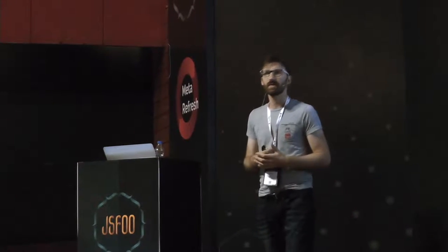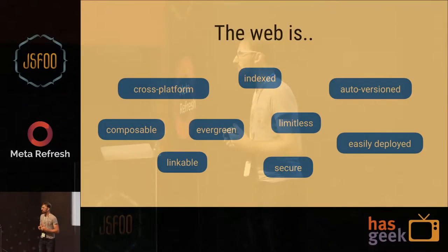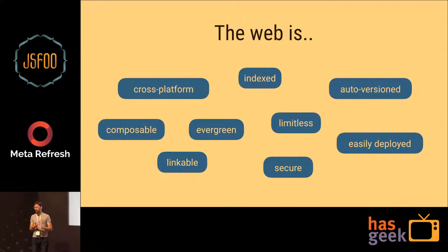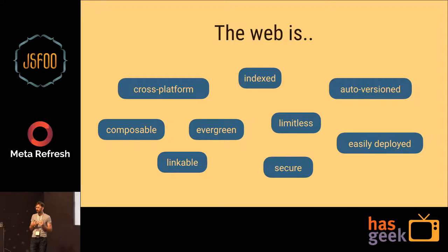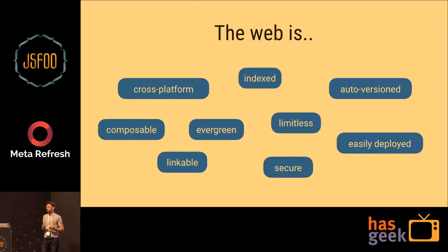So first, why are we even building for the web? A couple of things: it's cross-platform, composable, indexed, out-of-versioned, easily deployed, secure, linkable, and really limitless — open for everyone to play. Some of these characteristics really make the web what it is and why I still love it to this day.